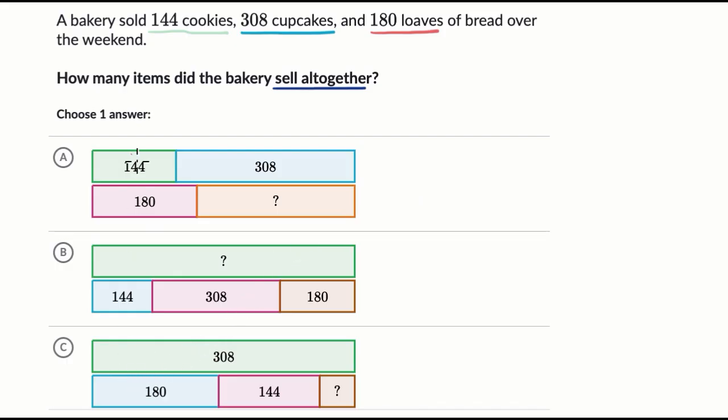So let's see, this first one, it looks like it's adding 144 and 308, the cookies and the cupcakes, but then it has the loaves of bread over here. So the loaves of bread plus something else is going to be the same as the cookies and the cupcakes. That doesn't make sense.